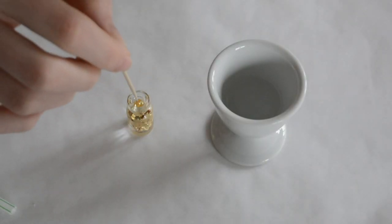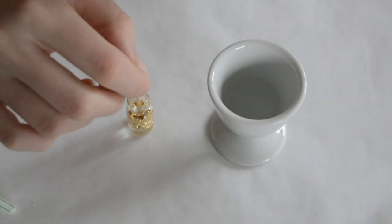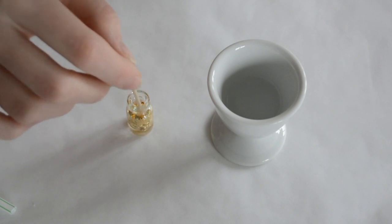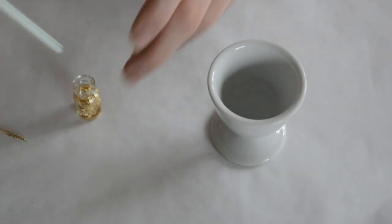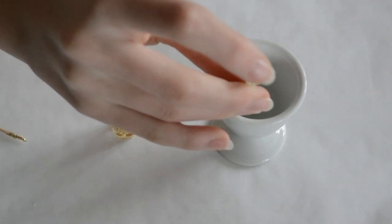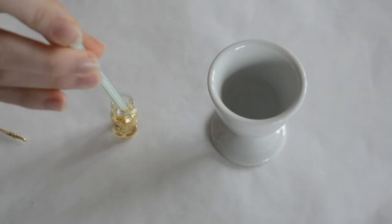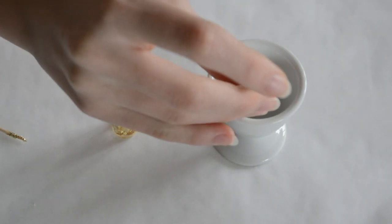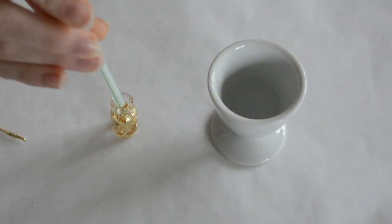I do recommend though to take a toothpick in between and to kind of stir everything around, because the gold leaf will either sink or it'll float to the top and then it will not separate nicely and it'll just be one clump. So if you stir it around a bit with your toothpick, it'll separate itself nicely and just turn out way nicer.